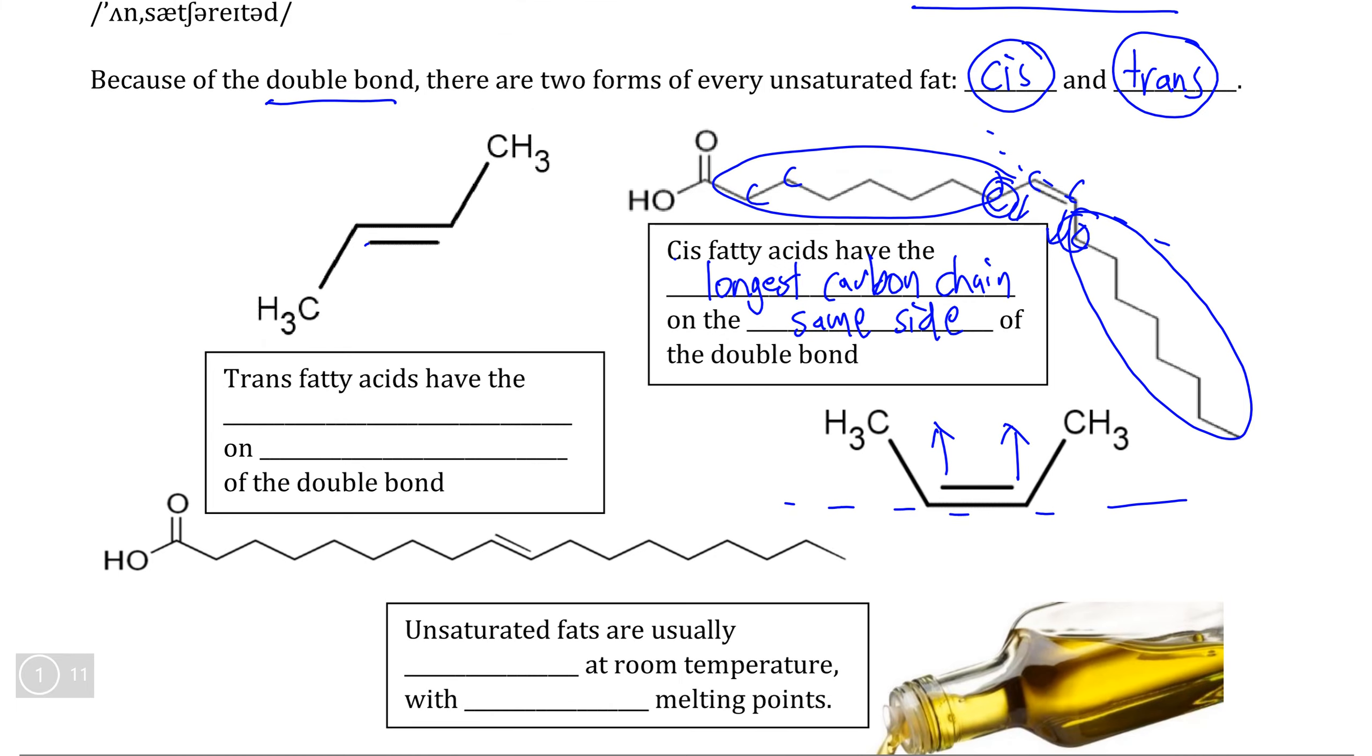If we look at this other form of the fatty acid, now technically this molecule and this molecule are the same if we look at their chemical structure. Same number of carbons and the double bond is even in the same location of the molecule, but these are actually different molecules and it all has to do with the position of each of these carbons coming off of the double bond.